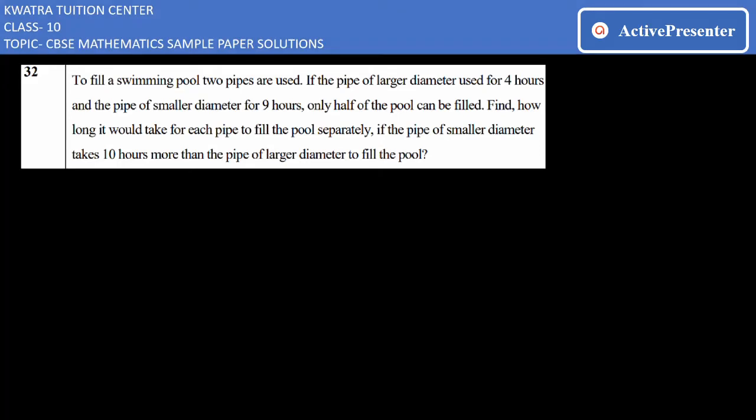Let's start with question number 32. This is section D of the sample paper. The question says: To fill a swimming pool, two pipes are used. If the pipe of larger diameter is used for four hours and the pipe of smaller diameter for nine hours, only half of the pool can be filled. Find how long it would take for each pipe to fill the pool separately if the pipe of smaller diameter takes ten hours more than the pipe of larger diameter to fill.